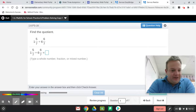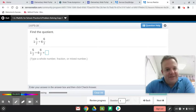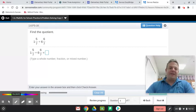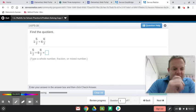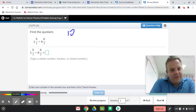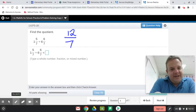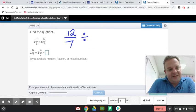So here we have 1 and 5 sevenths divided by 6 and 6 sevenths. The first thing we need to do is convert these mixed numbers into improper fractions. So 7 times 1 is 7, plus 5 is 12 sevenths divided by, and 7 times 6 is 42, plus 6 is 48 sevenths.